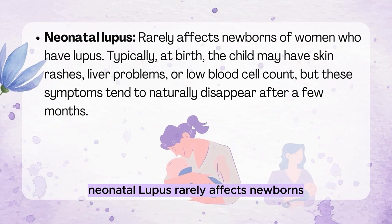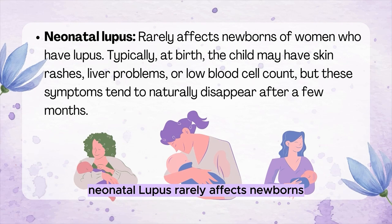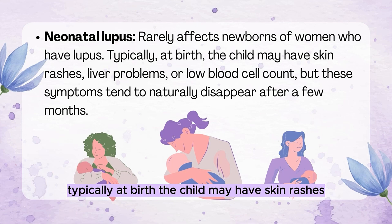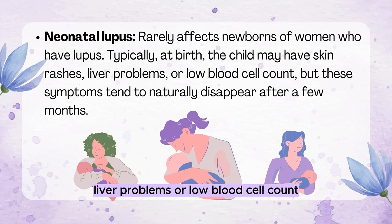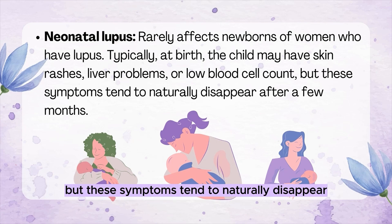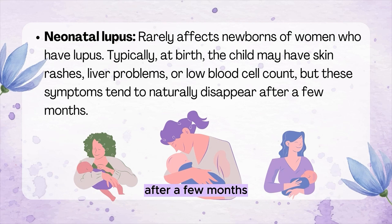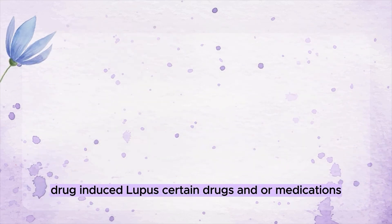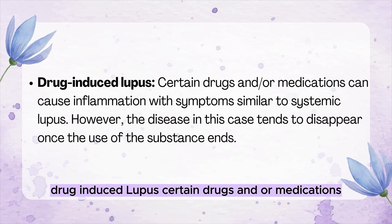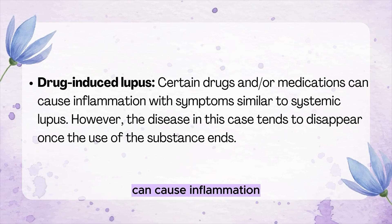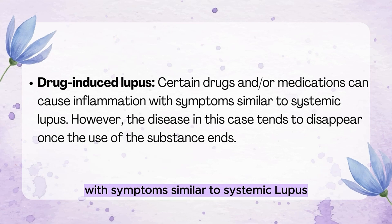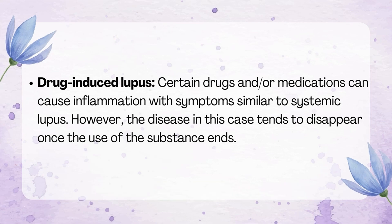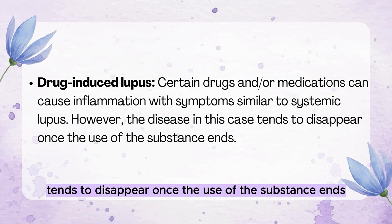Neonatal Lupus rarely affects newborns of women who have lupus. Typically, at birth, the child may have skin rashes, liver problems, or low blood cell count, but these symptoms tend to naturally disappear after a few months. Drug-induced Lupus: Certain drugs and/or medications can cause inflammation with symptoms similar to systemic lupus; however, the disease in this case tends to disappear once the use of the substance ends.